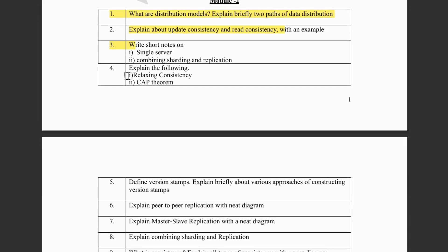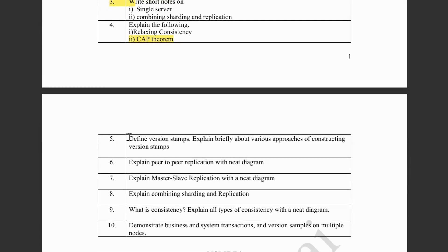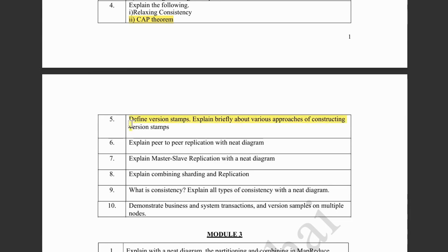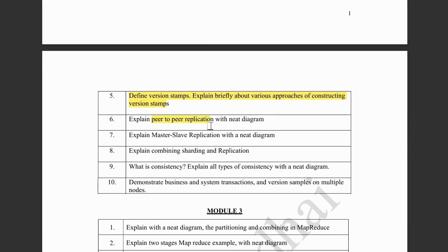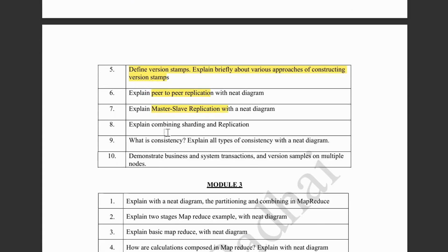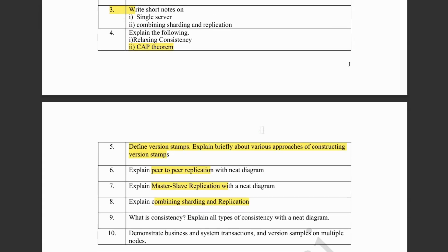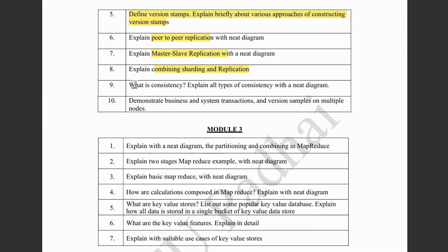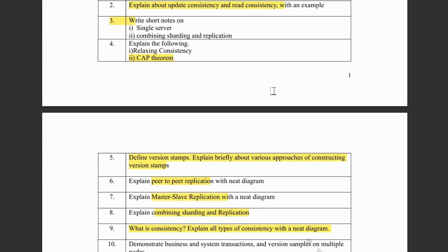Single server is a very simple topic, and the combination of sharding and replication is again very simple. Next we have relaxing consistency along with update and read consistency topics. CAP theorem is the most important one — it could be asked for 5 marks or 10 marks on its own, so don't miss this out. The second part of module 2 is about version stamps. There will definitely be a question on different approaches of constructing version stamps, which is again a very important topic. Then we have peer-to-peer replication diagram, master-slave replication diagram, and combining sharding and replication in detail — this could be 10 marks. If you cover these 10 questions, you'll be all done with the second module.